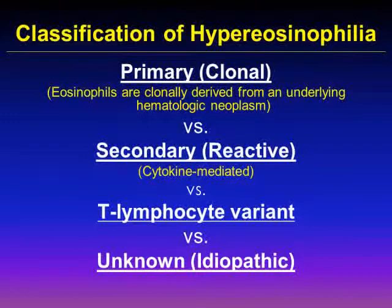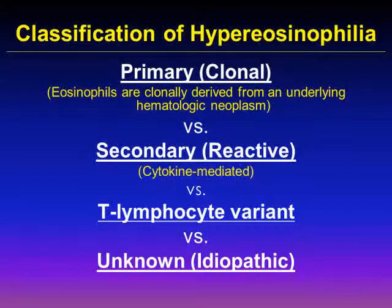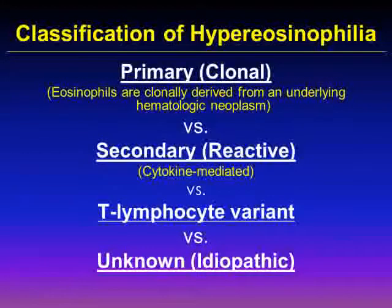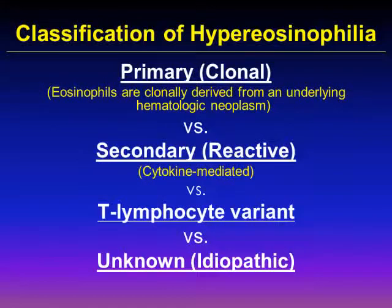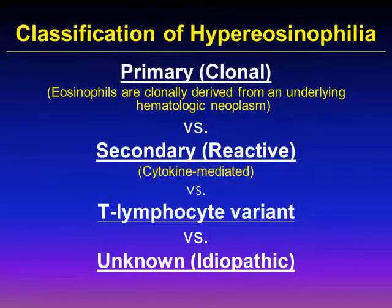Thirdly, the lymphocyte variant hypereosinophilia refers to a mixture of a clonal reactive process which can lead to an increased eosinophil count. If patients have neither a primary nor secondary cause of eosinophilia nor the lymphocyte variant, then they are diagnosed with an unknown or idiopathic form of hypereosinophilia — a cause for their increased eosinophil count cannot be determined. We use the term idiopathic hypereosinophilia to refer to patients with an elevated eosinophil count but no signs or symptoms of organ damage, but idiopathic hypereosinophilic syndrome for those who do show signs of organ damage.